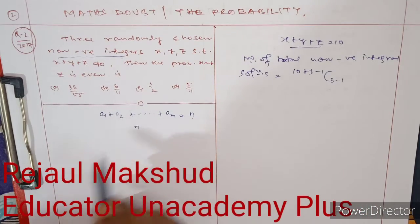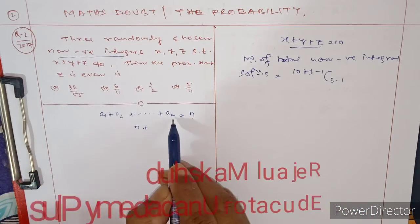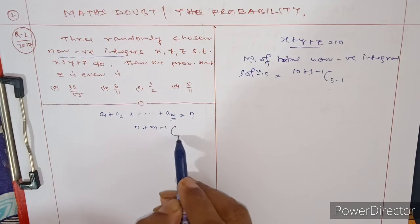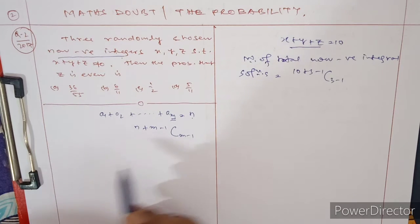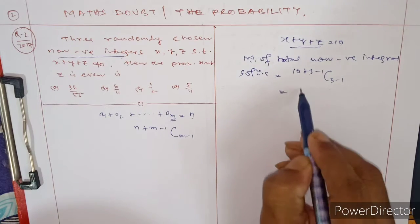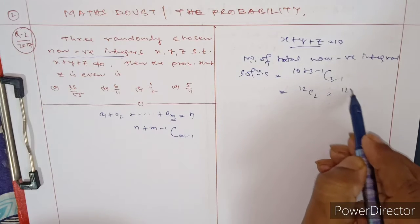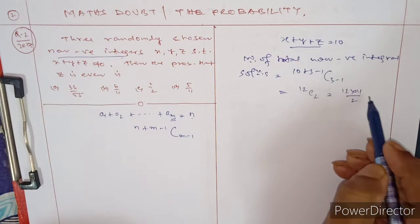This is a standard formula you should remember. Here the number of terms is m, so it's n + m - 1, C m - 1. Here that is 12C2, which equals 12 × 11 / 2, which is 66. This is the total possible cases.